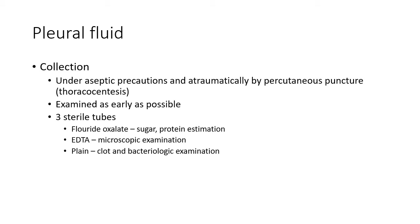The accumulation of pleural fluid in the pleural space is called pleural effusion. Causes include infection, inflammation of the pleura, mitral stenosis, pulmonary embolism, congestive cardiac failure, cirrhosis of the liver, and nephrotic syndrome. Collection of pleural fluid is done under aseptic precautions atraumatically by percutaneous puncture — the procedure is called thoracocentesis. Doing the procedure atraumatically is important to avoid mixing fresh blood with pleural fluid.